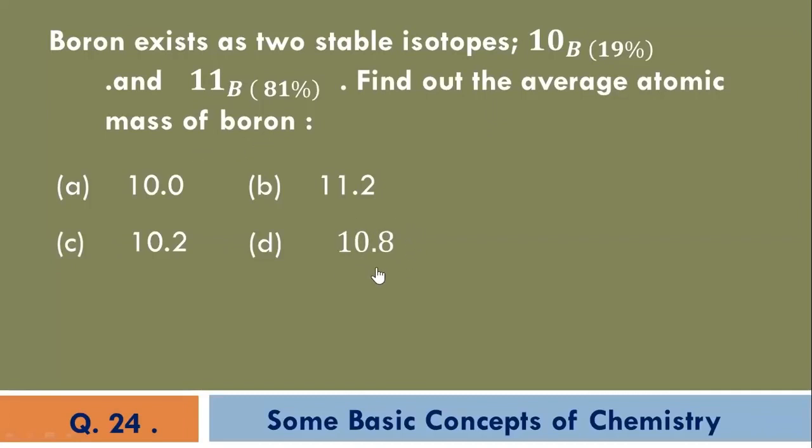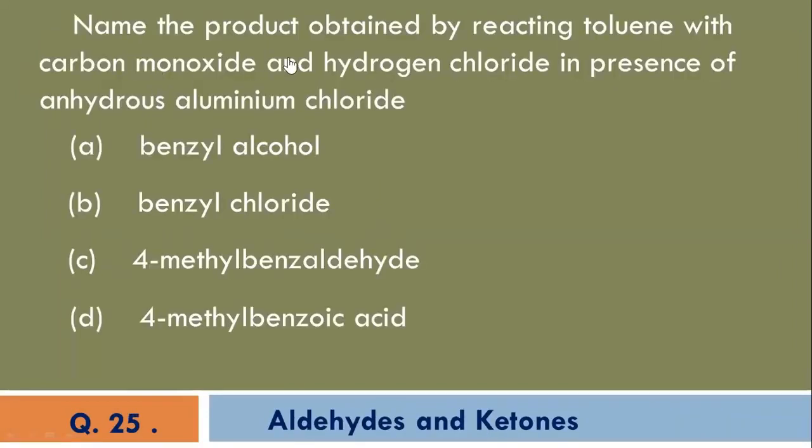Name the product obtained by reacting toluene with carbon monoxide and hydrogen chloride in presence of anhydrous aluminum chloride. C is the correct option.